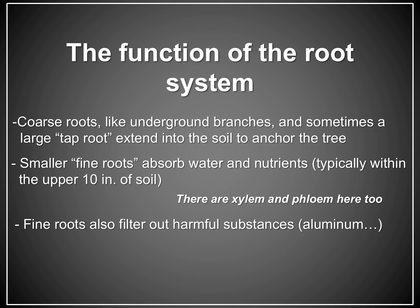Trees maintain both coarse roots and fine roots. The coarse roots act as essentially underground branches providing structural support. Some trees growing in low moisture or nutrient-poor soils maintain large tap roots that extend far down into the soil profile. The smaller fine roots are responsible for absorbing water and nutrients, extending laterally throughout the soil, typically no deeper than the first 10 inches. There is vascular tissue — xylem and phloem — within the entire root system. Fine roots also filter out harmful substances naturally present in the soil but toxic to plants, such as aluminum.